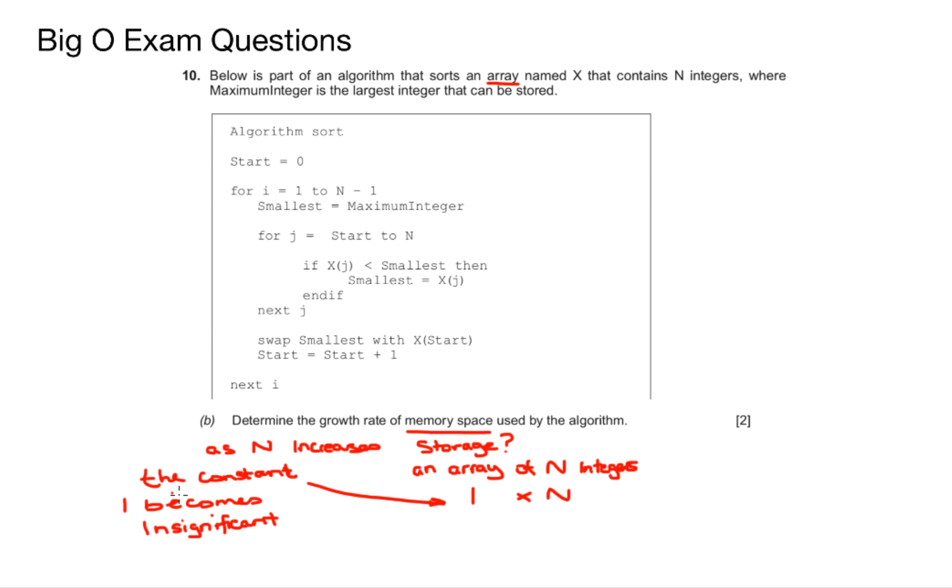The one array that we have will never increase. We can only ever have one array. The numbers in the array can change and we can hold a lot more numbers, so we can say that over time if we add more numbers, that will change and that will dominate this equation as one is a constant, and therefore this becomes order of n.